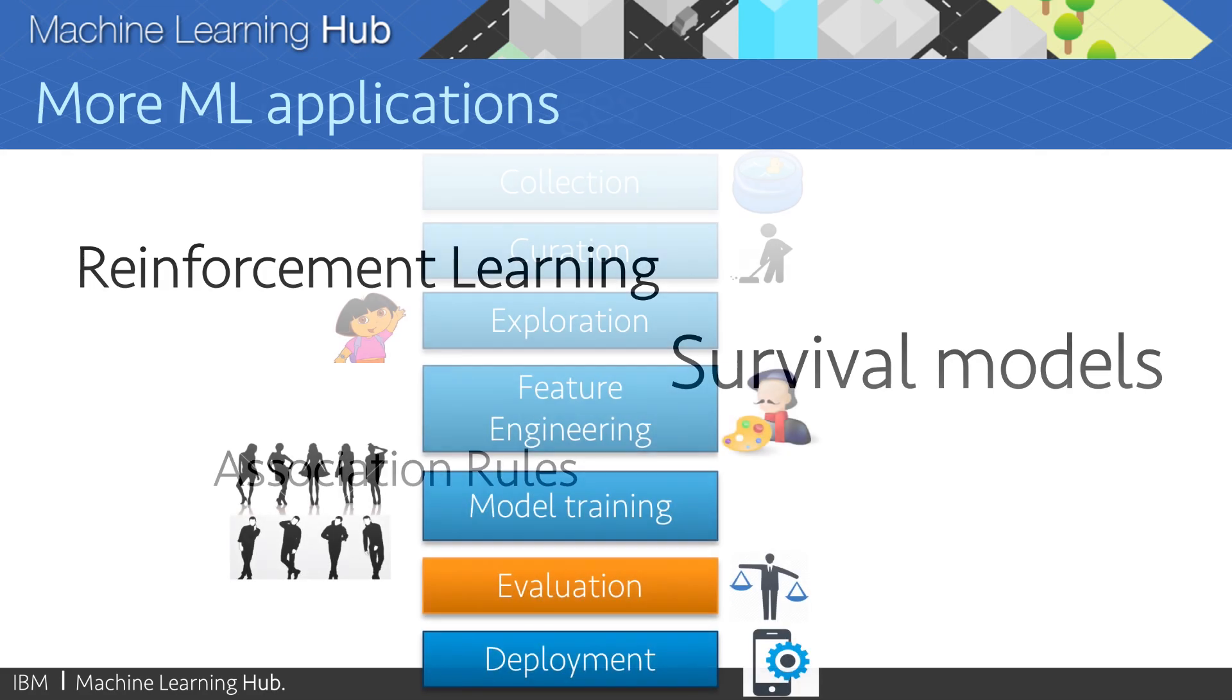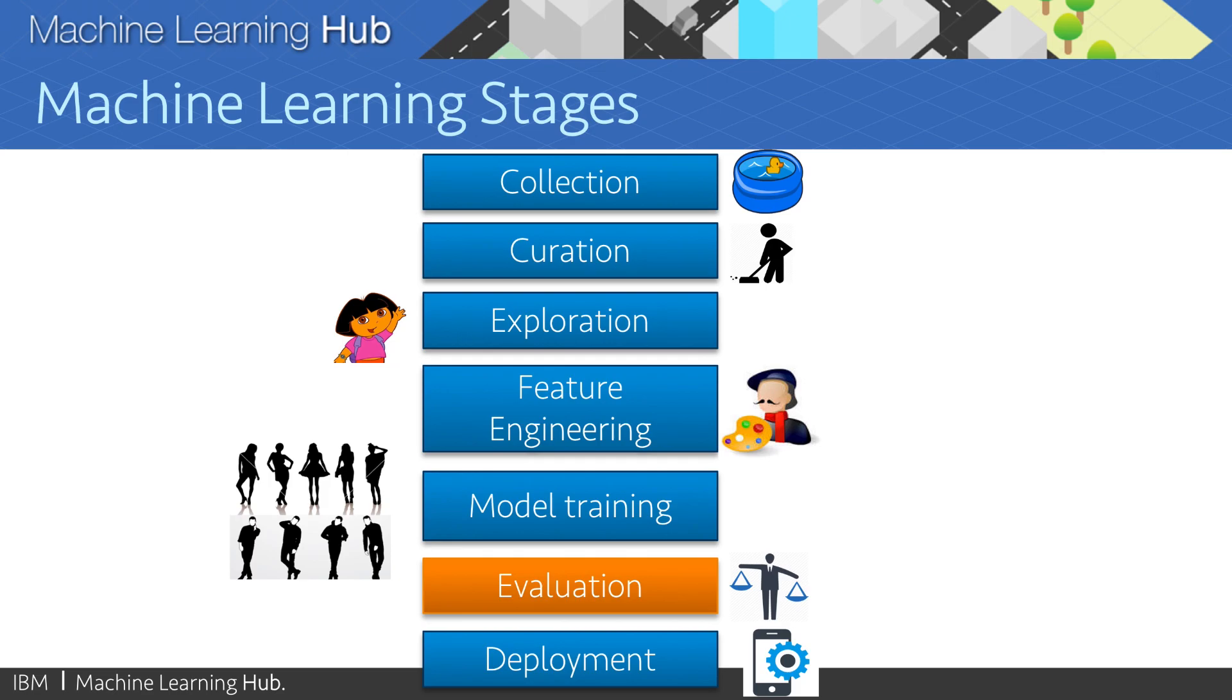In general, when working on a use case, data scientists build not one, but many models, trying out different algorithms, and different parameters within each of those algorithms. So how do you actually select which of those models is the best one for your application?